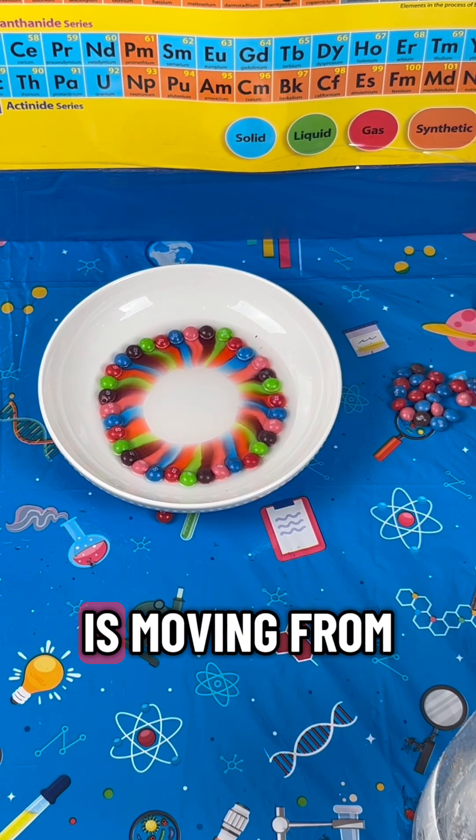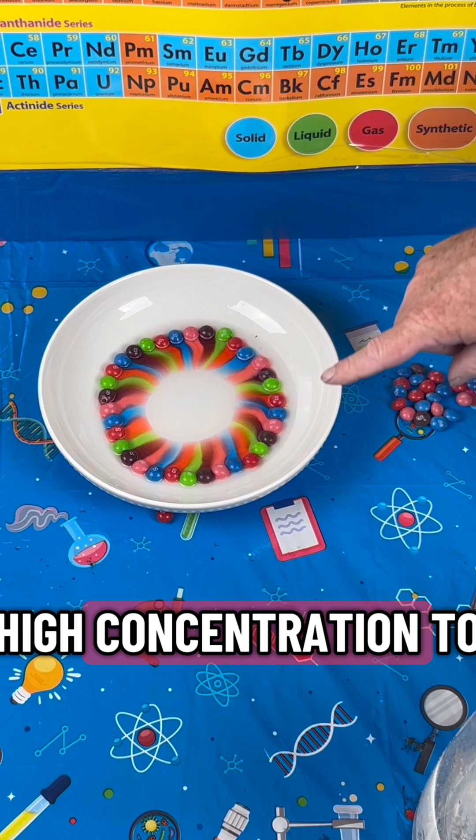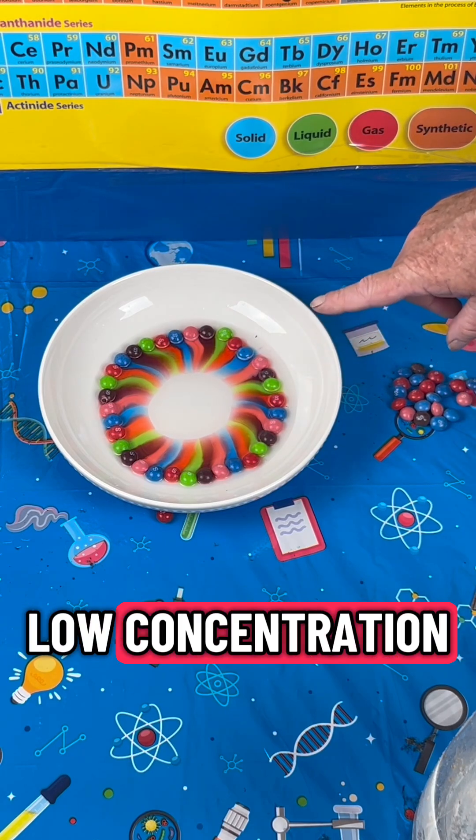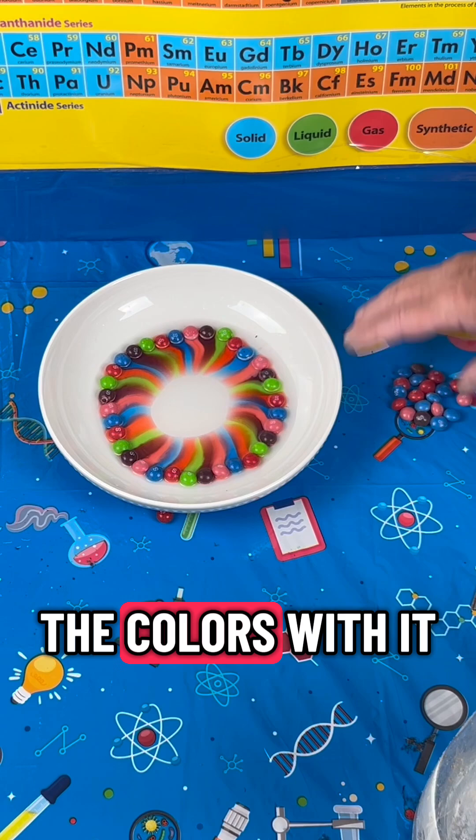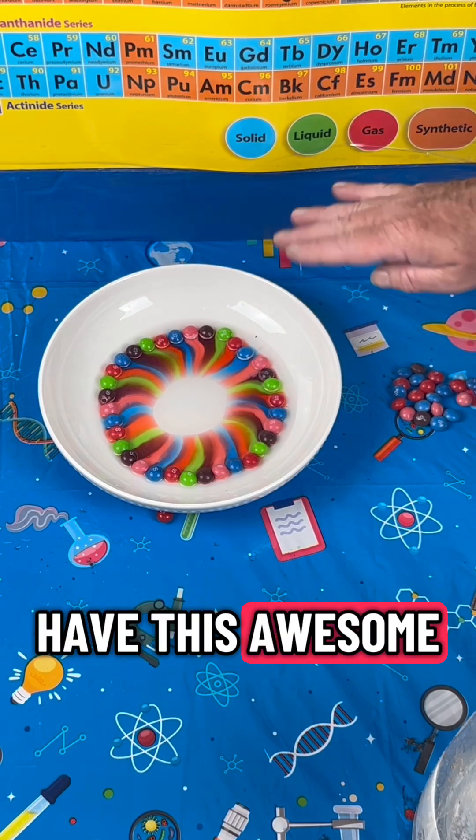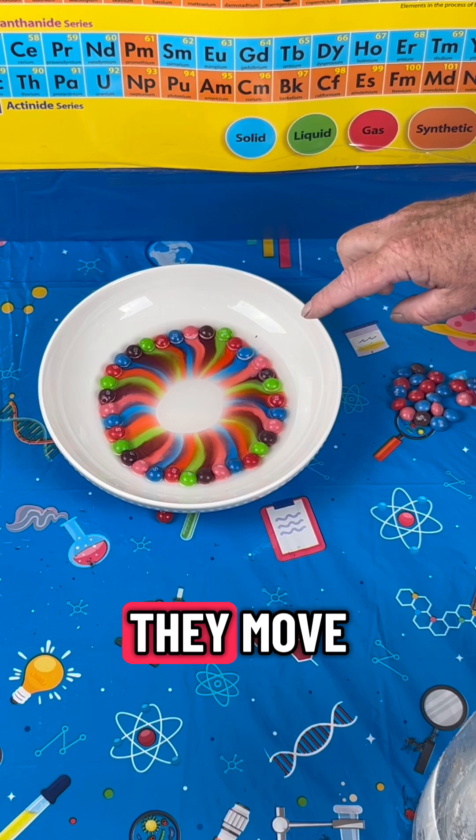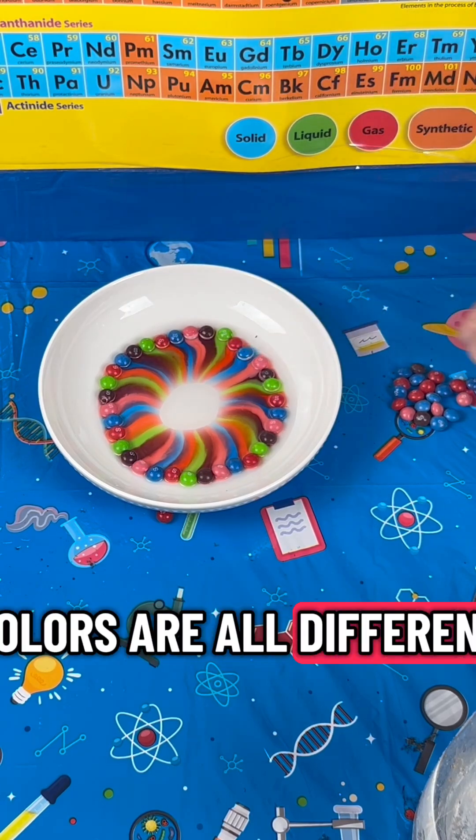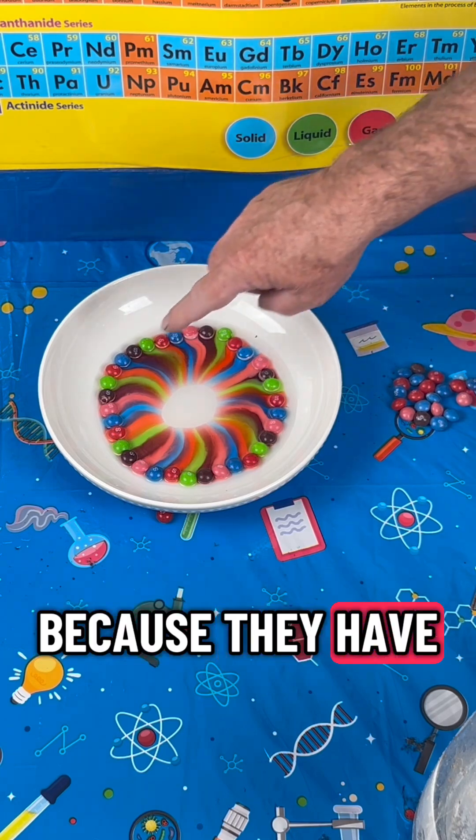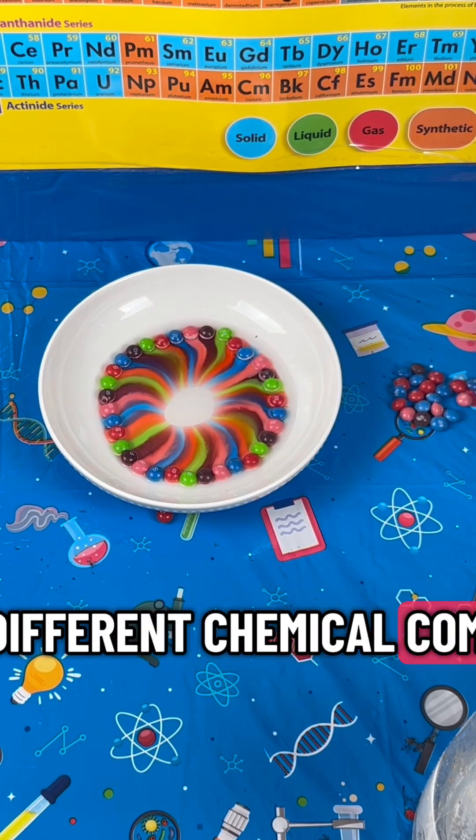It is moving from an area of high concentration to low concentration and taking the colors with it. You have this awesome tie-dye effect as they move, and because the colors are all different, they're not mixing because they have slightly different chemical compositions.